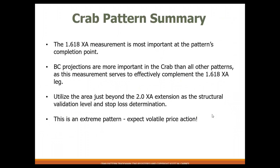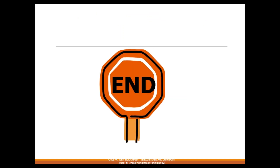The crab is a phenomenal structure, and I love the opportunity especially in intraday situations, because the 1.618 is one of our primary harmonic ratios and it really does respond even in short-term reactive situations. We want to look at the BC projections — those help to complement the crab and focus in on exactly where at that 1.618 we want to take the trade. Utilize the area just above the 2.0 as the structural validation level as well as your stop loss. It's one of my favorite patterns and we've really refined the structure since its initial inception — do check it out on intraday levels. I'm Scott Carney for Harmonic Trader; visit us at HarmonicTrader.com.